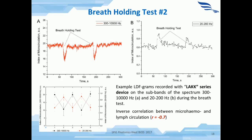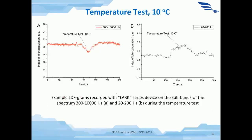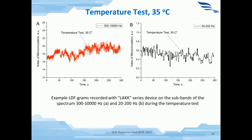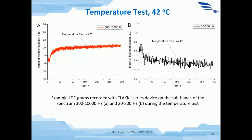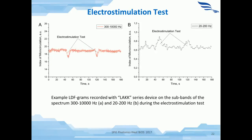This slide shows example LDF recordings made with the dual-channel device on different frequency sub-bands of the spectrum during the breath holding test. An inverse correlation between micro-hema and lymph circulation for both inhale and exhale was observed during breath tests. Similarly, example LDF recordings from the dual-channel device during the temperature test at 10 degrees, 35 degrees, and 42 degrees show an increase of microcirculation in the high frequency range and a decrease in the low frequency range. A similar inverse correlation is also seen in the electrostimulation test.